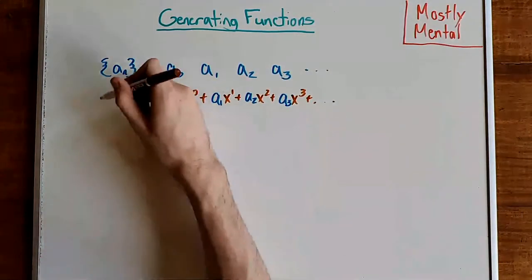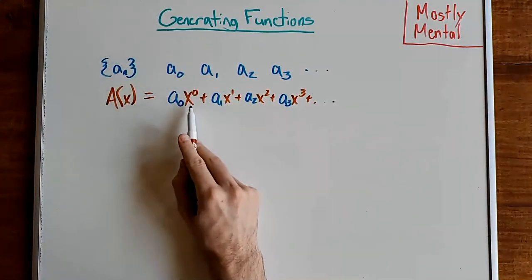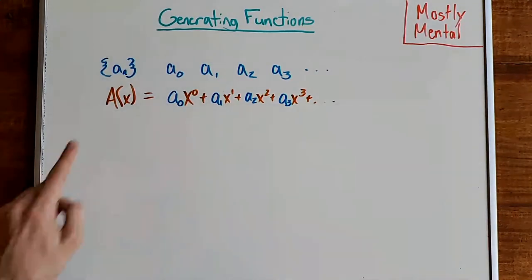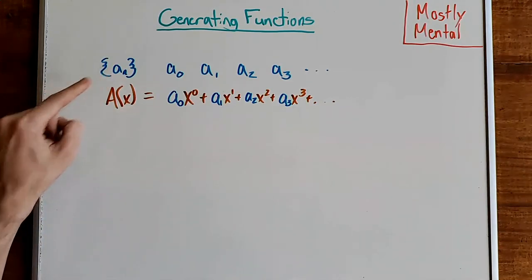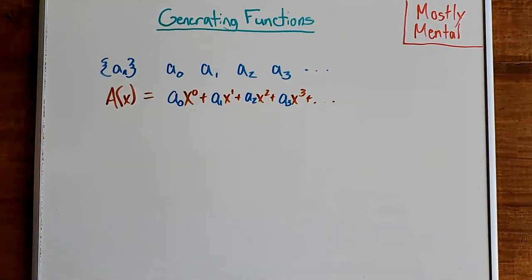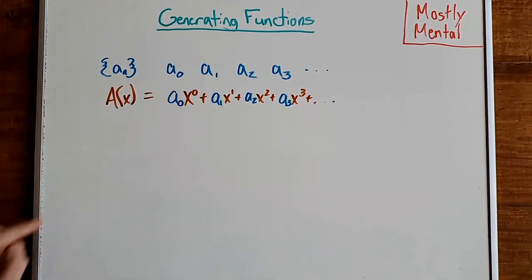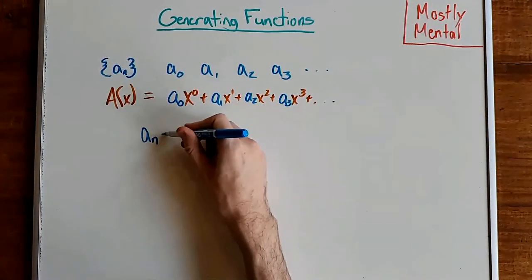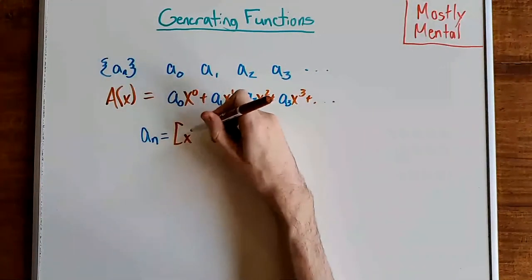That is, it's the power series A of x given by a0 x to the 0 plus a1 x to the 1, and so on, where we use this capital A to denote the sequence of little a's. And inversely, if we want to get the sequence back out of the generating function, we just need to look at the coefficients. To get a sub n, we just take the coefficient of x to the n, which we write with square brackets.